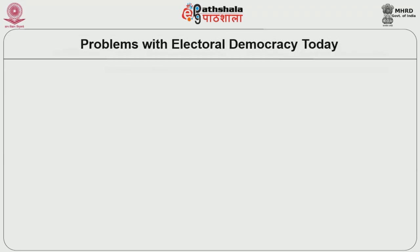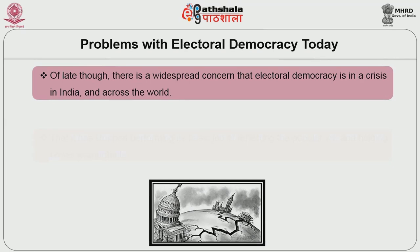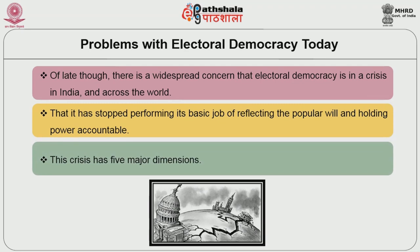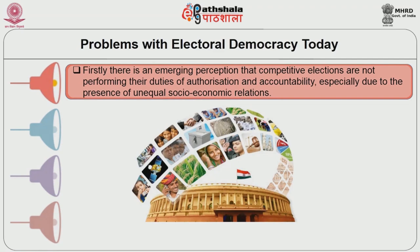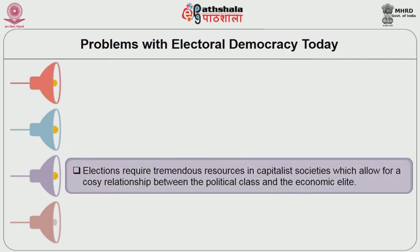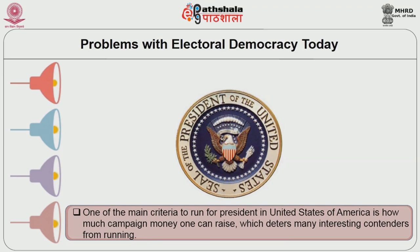Problems with electoral democracy today. Of late, there is a widespread concern that electoral democracy is in a crisis in India and across the world, that it has stopped performing its basic job of reflecting the popular will and holding power accountable. This crisis has five major dimensions. Firstly, there is an emerging perception that competitive elections are not performing the duties of authorization and accountability, especially due to the presence of unequal socioeconomic relations. Regular elections in the presence of wide, unequal social relations have often become conduits for the formation of oligarchies. Elections require tremendous resources in capitalist societies, which allow for a cozy relationship between the political class and the economic elite. For example, one of the main criteria to run for president of the United States is how much campaign money one can raise, which deters many interesting contenders from running.